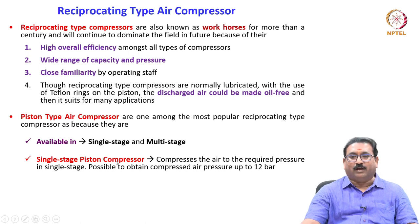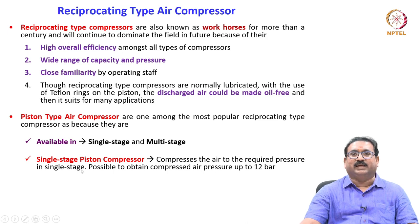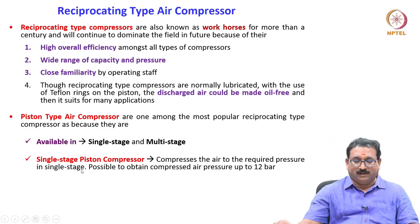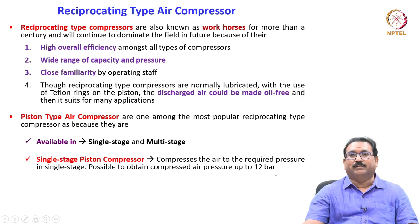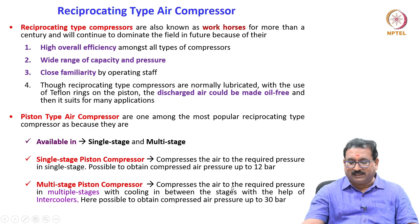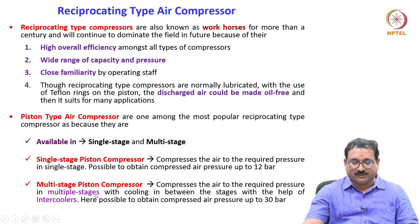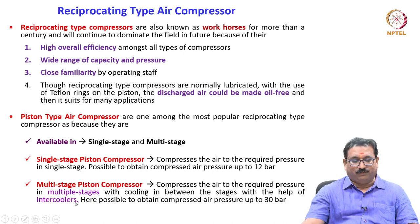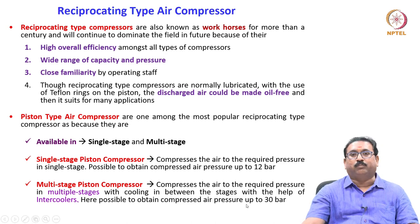Single stage piston compressor compresses the air to the required pressure in a single stage — it will suck and compress in one cycle. It is possible to obtain compressed air pressure up to 12 bar, based on piston diameter and related factors. Multi stage piston compressor compresses the air to the required pressure in multiple stages, with cooling in between stages using intercoolers. Hence, it is possible to obtain compressed air pressure up to 30 bar.